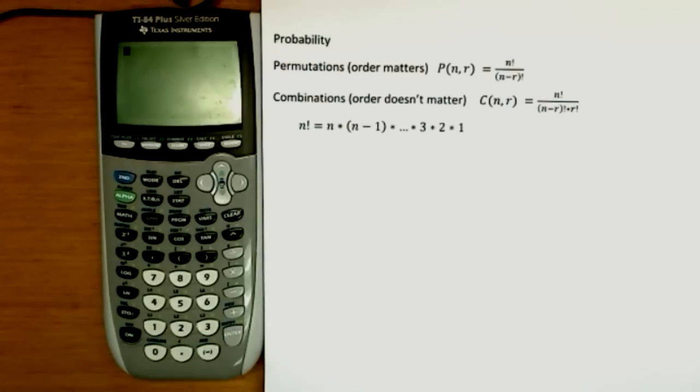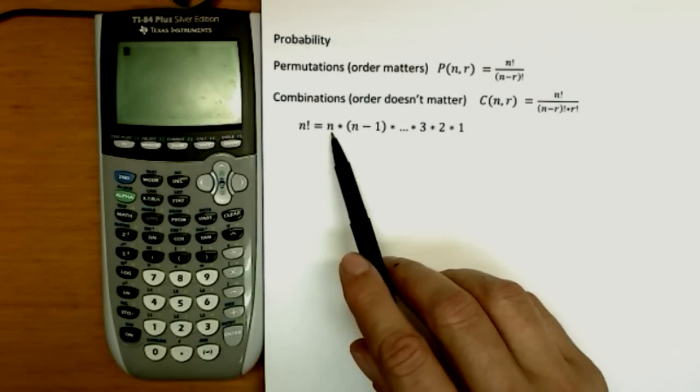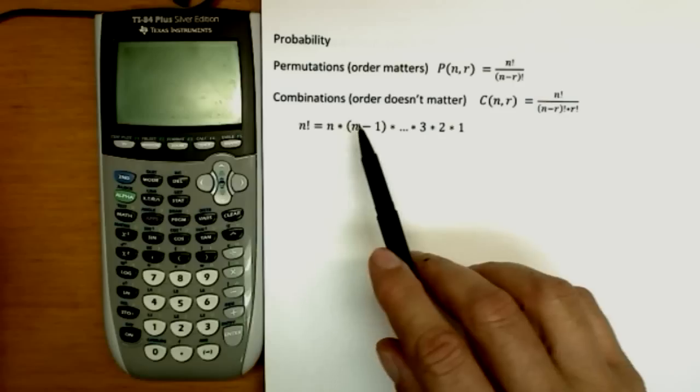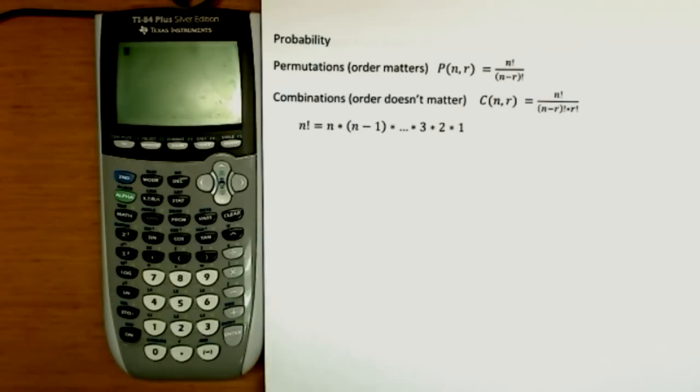And as a quick reminder, factorial mathematically means you multiply from the number all the way down. So if this was 10 factorial, it would be 10 times 9 times 8 times 7 all the way down to 1.